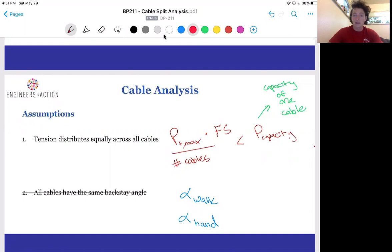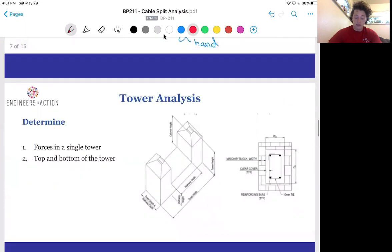However, we will eliminate the assumption that all cables have the same backstay angle. Remember how we used the handrail alpha angle for all the cables in order to set up our future calculations. Do you think splitting the cable forces up this way will change our cable capacity? No, but it will affect our other analyses down the road.